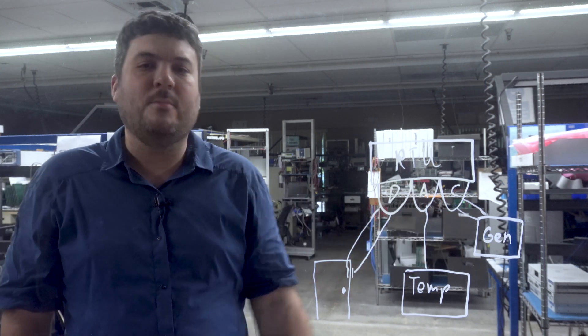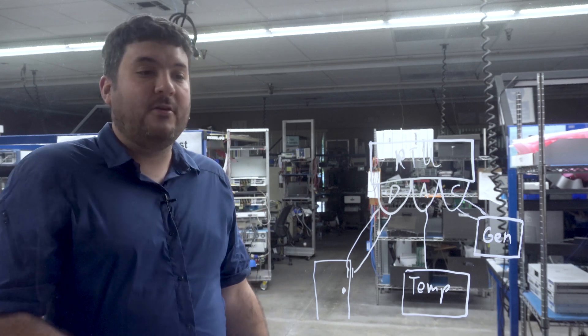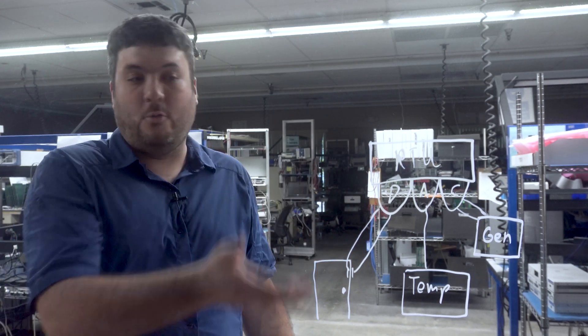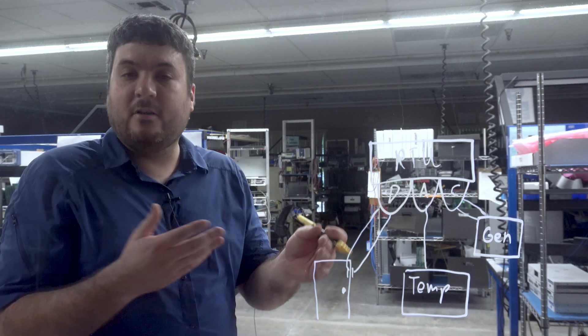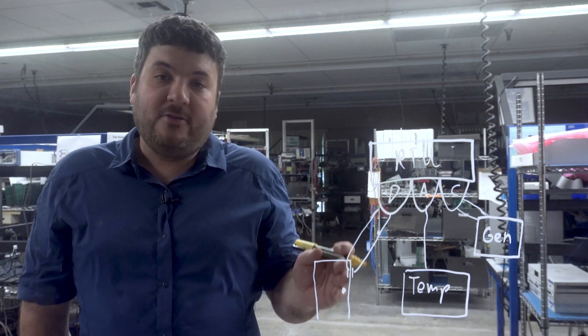So those are your big three inputs and outputs. And at this point, your RTU has a fair amount of information. Your RTU, for example, a medium-sized device might have 16 discretes and 4 analogs and maybe 4 control relays. So you'll choose an RTU that has the right combination of these. And now it has information, but it's got to get it to you somehow.